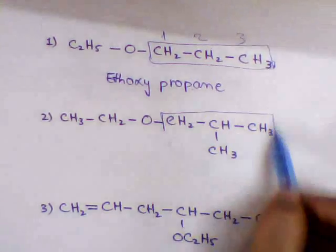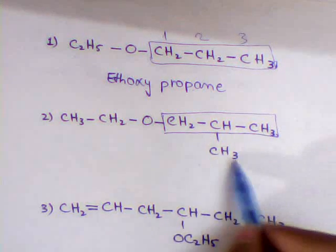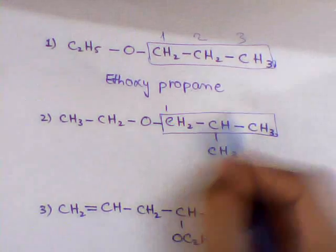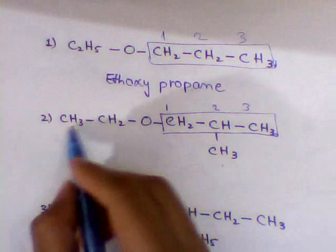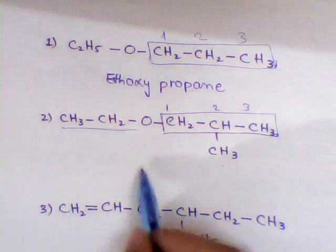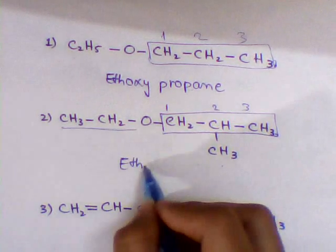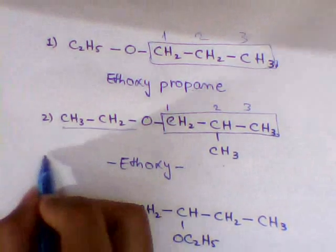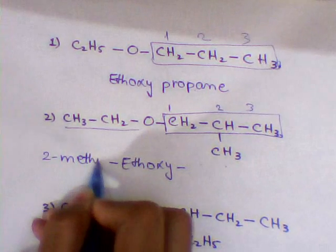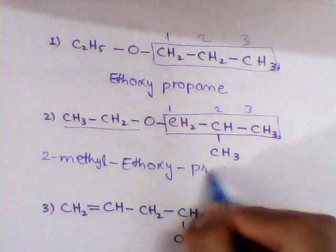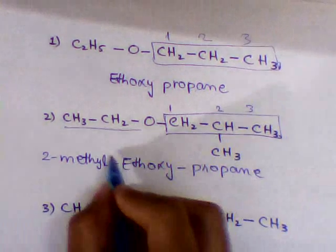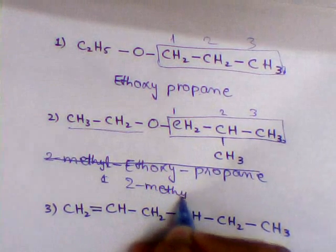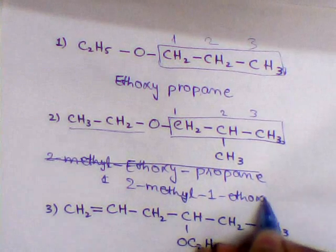In example 2, again we select the longest chain. We have a branch, and we give priority to the methyl branch for numbering. For the shorter alkyl side we use 'oxy' — we have two carbons so we use 'ethoxy'. The branch name should be written first. So the name is 2-methyl-1-ethoxypropane.